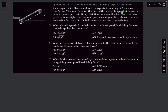The sand falls on the belt with negligible speed at a constant rate μ kg/s. Friction between the belt and the sand particle is so high that the sand particles stop sliding almost instantaneously after they hit the belt — they start moving up the incline with the speed of the belt in a very small time. We have to figure out the speed of the belt for the least possible driving force that the motor has to apply.